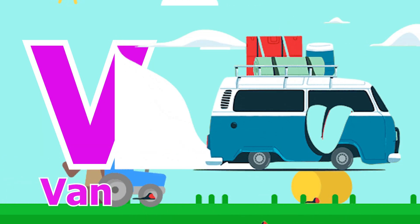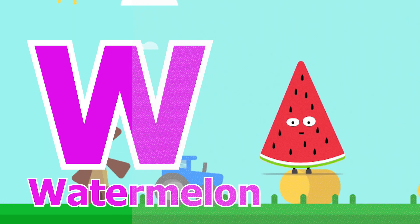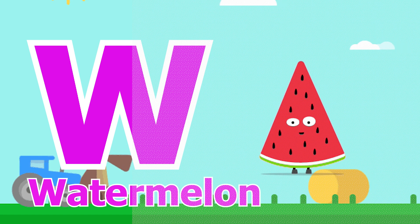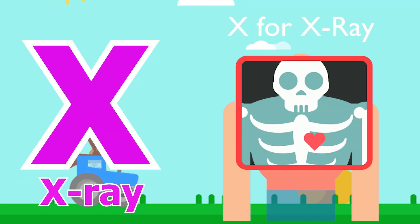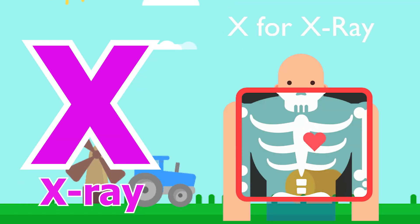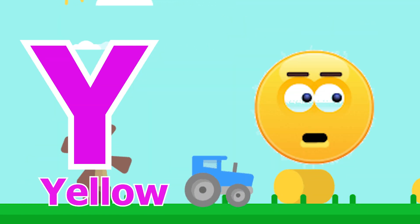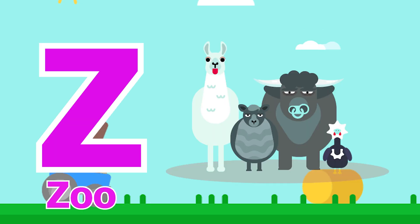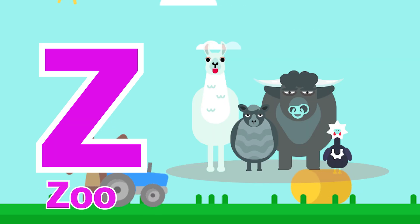V for Wen, W for Watermelon, X for X-Ray, Y for Yellow, Jet for Zoo.